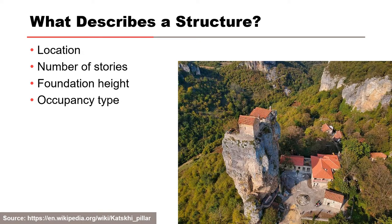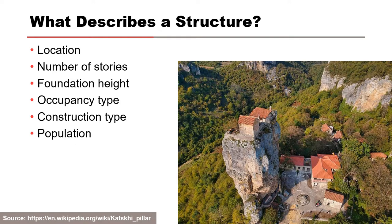Occupancy type makes it simpler to identify what type of structure you're looking at and apply things like depth-damage functions. Construction type matters — is it wood-framed, steel, or brick? Studies have looked at the survivability of different building types in floodwaters. Population is also important — not only do we want to know population, but we often want to know population by time of day and weekends. We want to know if a flood happens on the weekend, or if there's an event center in the inundation area.